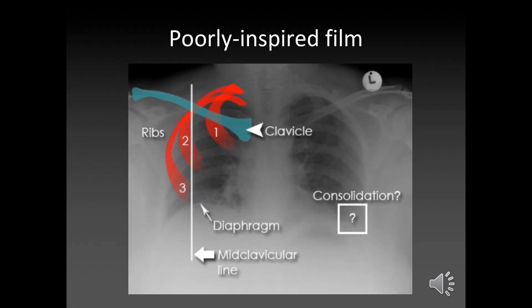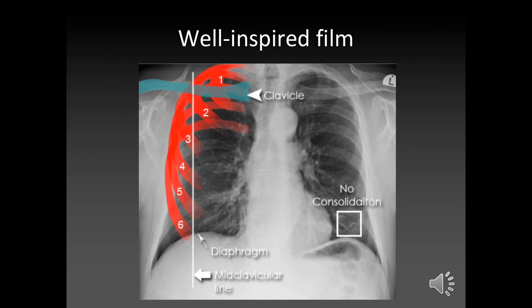This is a poorly inspired film — you can only see three ribs measured to the mid-clavicular line. You can't really see the heart; it all looks quite congested with white areas that would usually suggest fluid, as in heart failure. The heart looks quite big and there appears to be consolidation. However, when you do a proper PA film on the same patient, there is no consolidation, the heart is completely fine, and you get a good number of ribs visible.